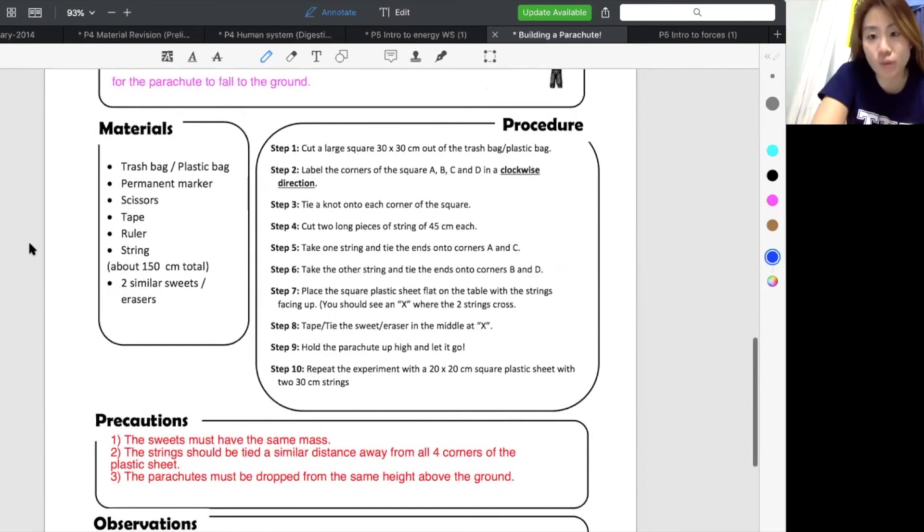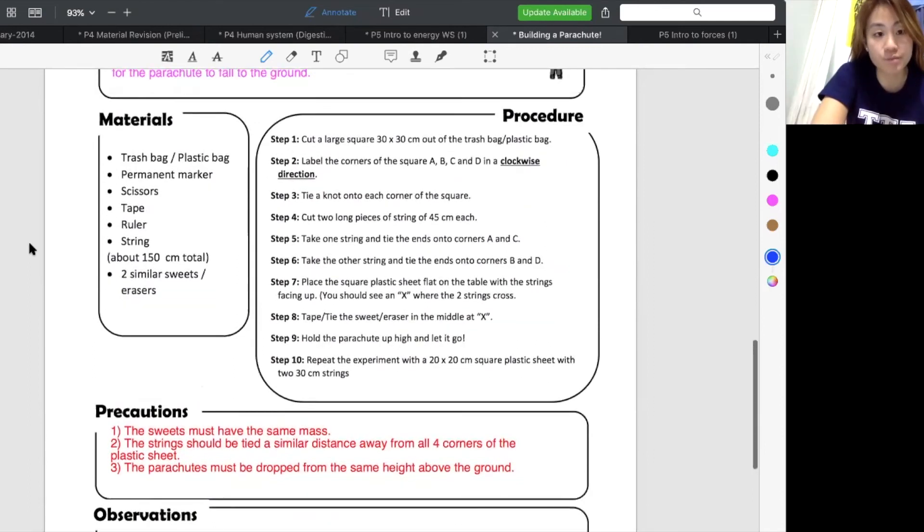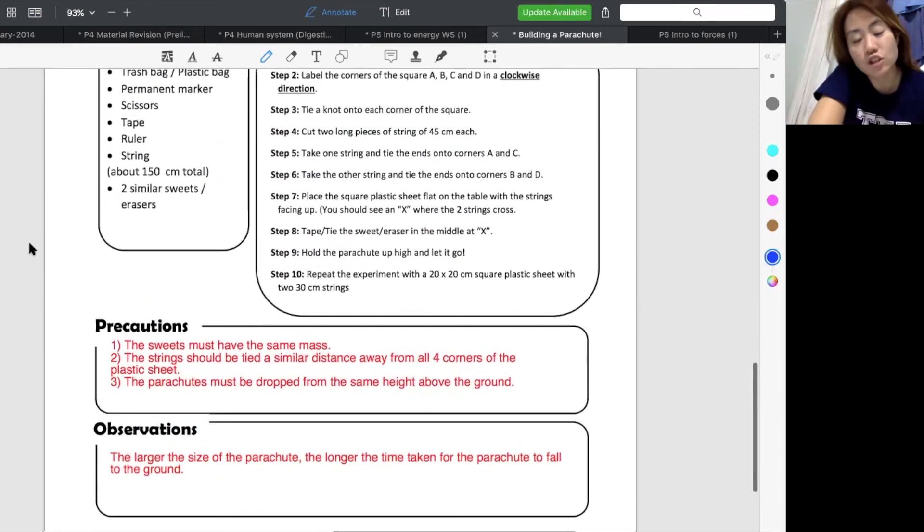Observation. So like what I said earlier, what do we observe? So observation usually will answer the hypothesis. So in this case, we say that the larger the parachute, you can also say the smaller the parachute, but your time taken will be different. So you can just say the larger the size of the parachute, we know the longer the time taken for the parachute to fall to the ground.